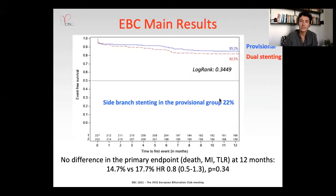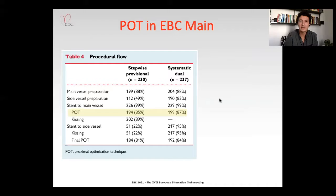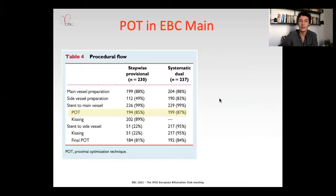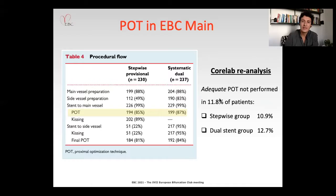What we were interested to see was whether POT had some impact on the outcome of these patients. POT — proximal optimization technique — was mandatory by protocol in the EBC main, but from the data received from the multiple centers involved, probably because of operator preference, around 15% of patients did not undergo POT. In this sub-analysis, we used a core lab re-analysis of the procedures to assess whether adequate POT was performed. By re-examining the angiograms, adequate POT — with the characteristics described — was not performed in around 12% (actually 11.8%) of patients from both groups.